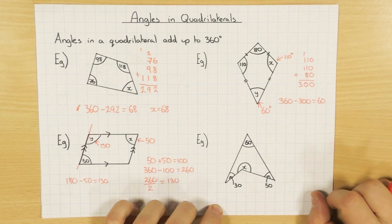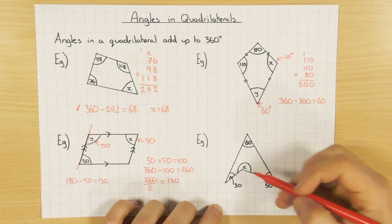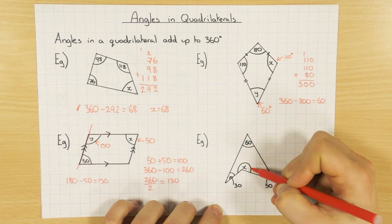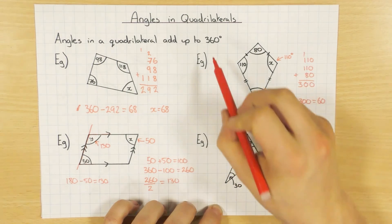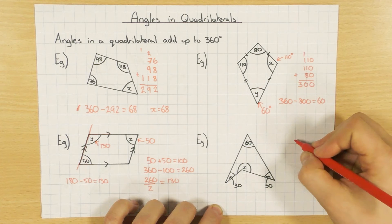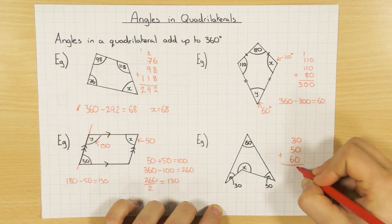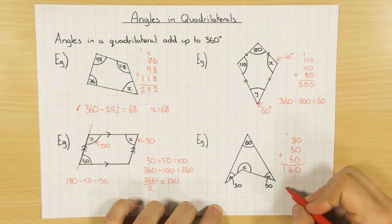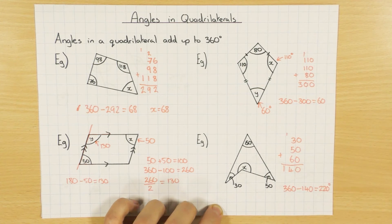So next example here is like an arrowhead shape, and lots of people will get a bit confused because this point goes in — it's not like any other usual quadrilateral you see. But the rule is still the same. All the interior angles — thirty, sixty, fifty, and then this reflex angle — are all going to add up to three hundred and sixty, because it's still one, two, three, four sides; still a quadrilateral. So I do thirty plus fifty plus sixty, which adds up to a hundred and forty. Then three hundred and sixty minus a hundred and forty is two hundred and twenty degrees — a reflex angle, because it's above a hundred and eighty degrees.